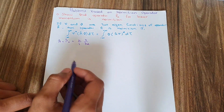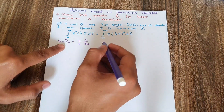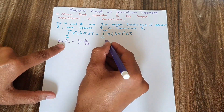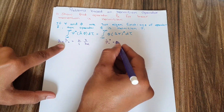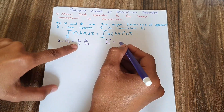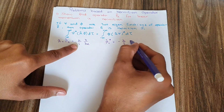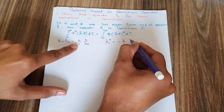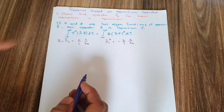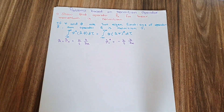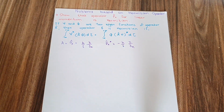The value of px* — the complex conjugate — should be equal to, since iota here becomes negative, minus ℏ/i times the partial derivative with respect to x. So here comes the minus sign.